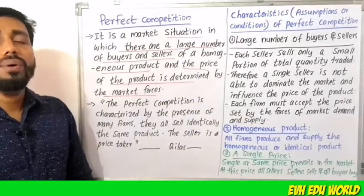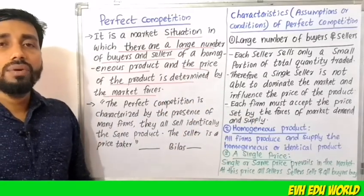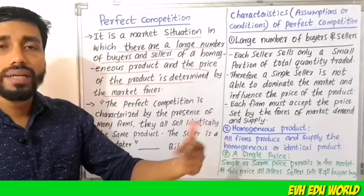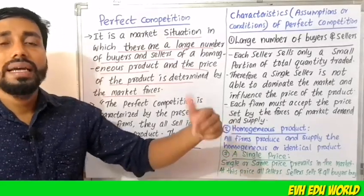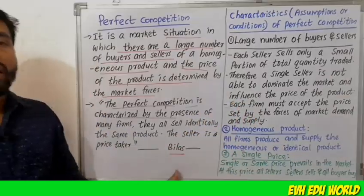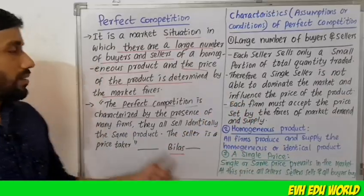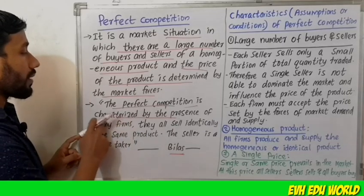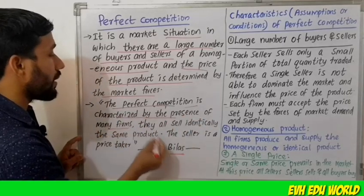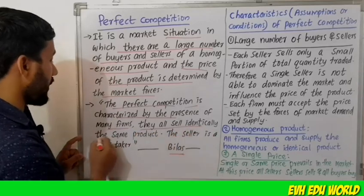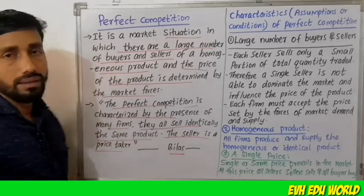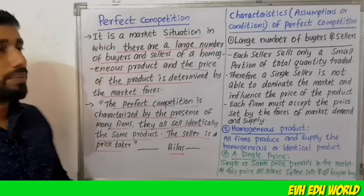The sellers are price takers, not price makers — they accept the price set by the market. According to Bain's definition, perfect competition is characterized by the presence of many firms that all sell identically the same product, and each seller is a price taker.